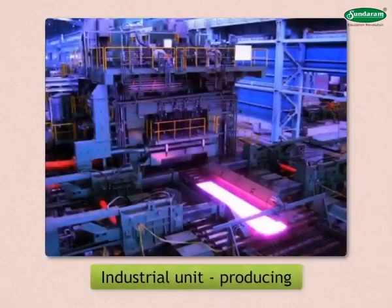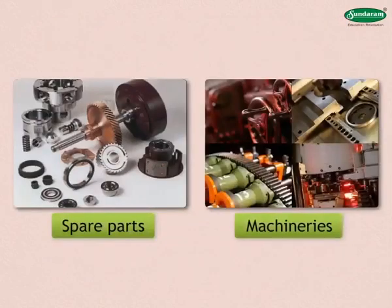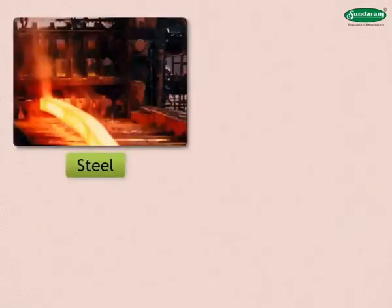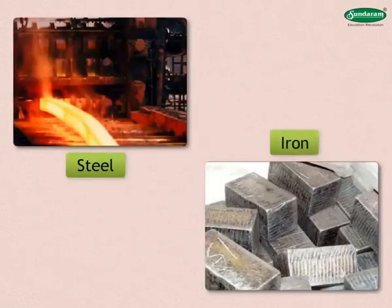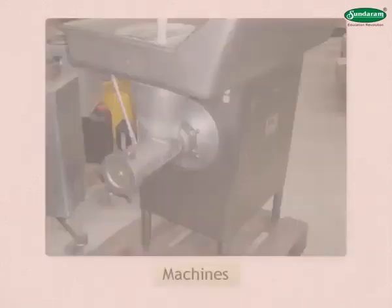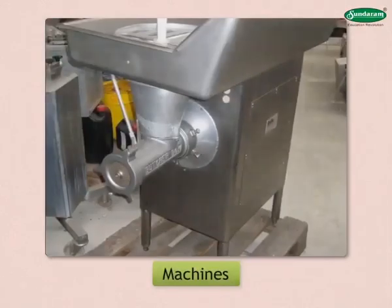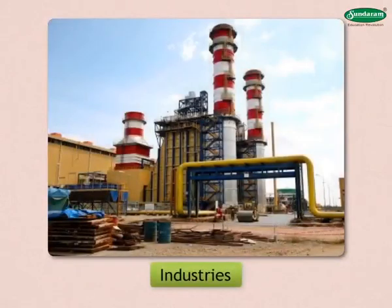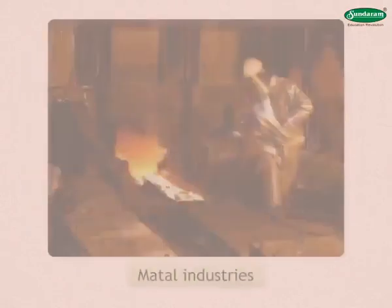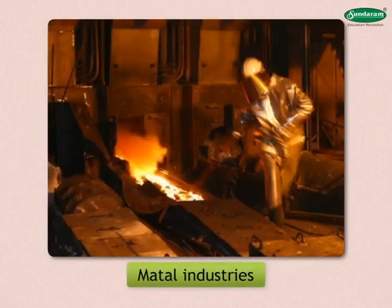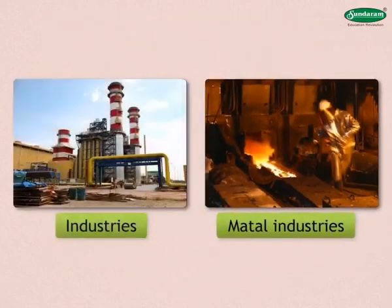Hence, cotton industry first developed in Mumbai due to its humid climate. Engineering industry. It is an industrial unit producing spare parts and machineries required by other industries. For example, steel produced in an iron and steel industry forms the raw material for producing various machines. These industries are generally located in areas where metal industries providing raw materials are present.